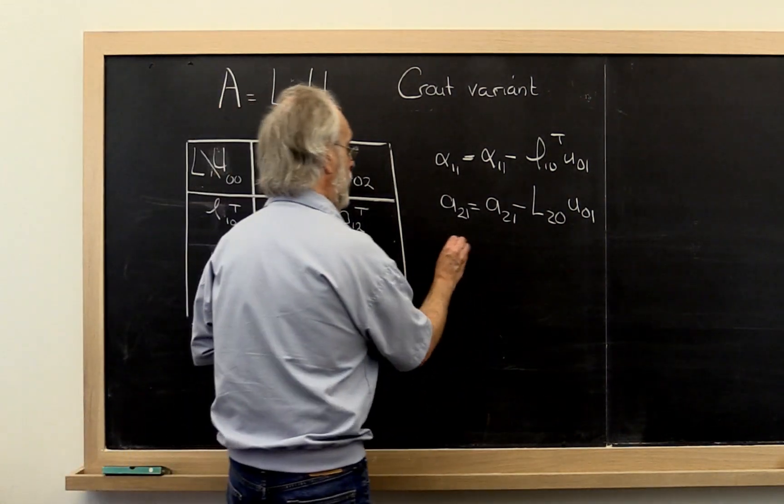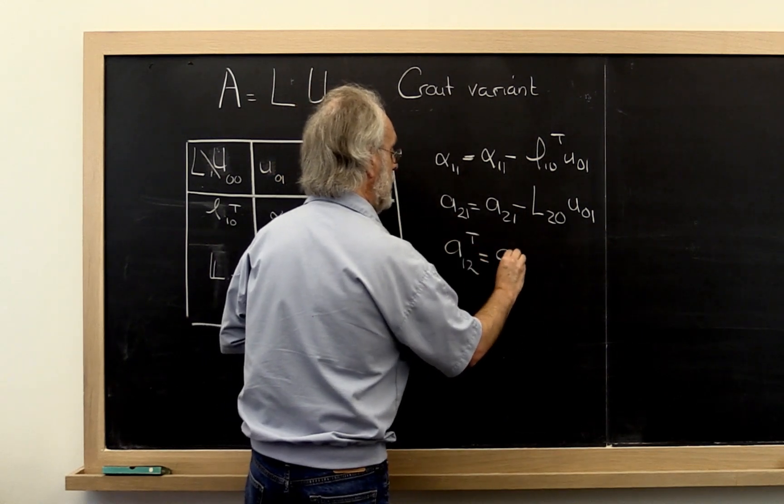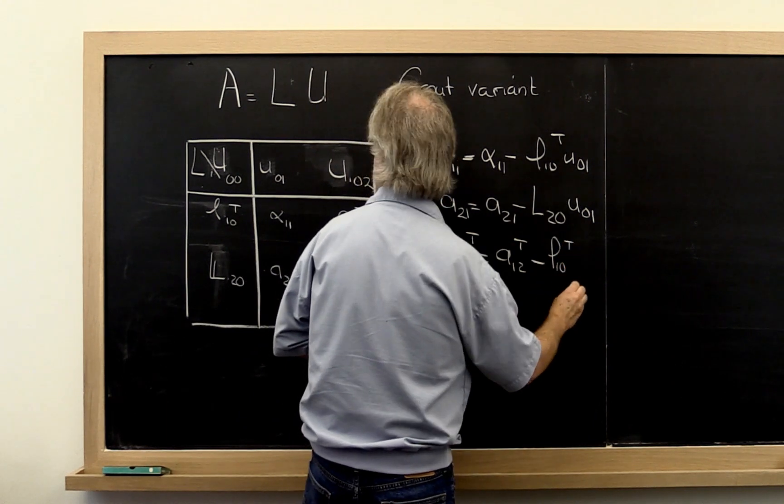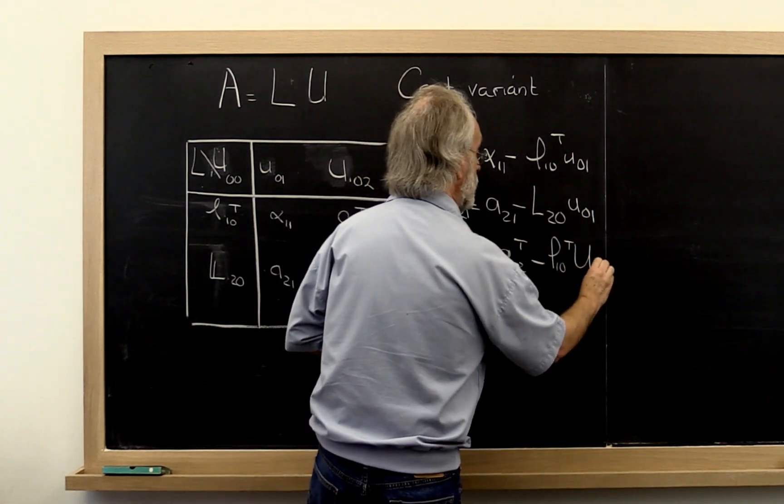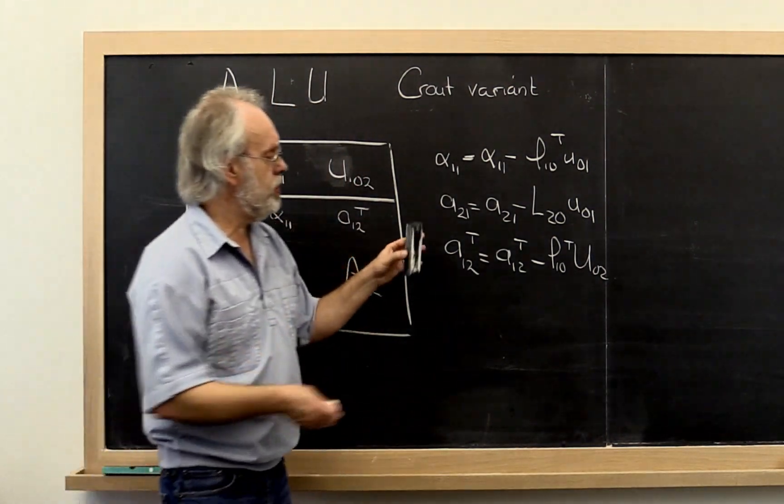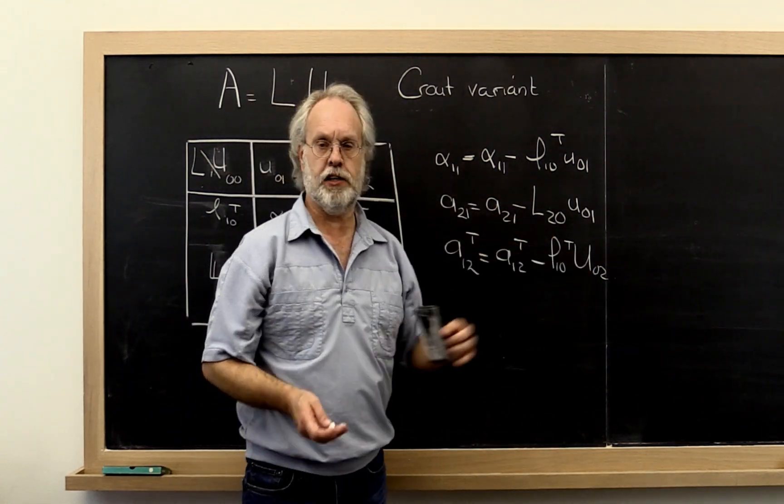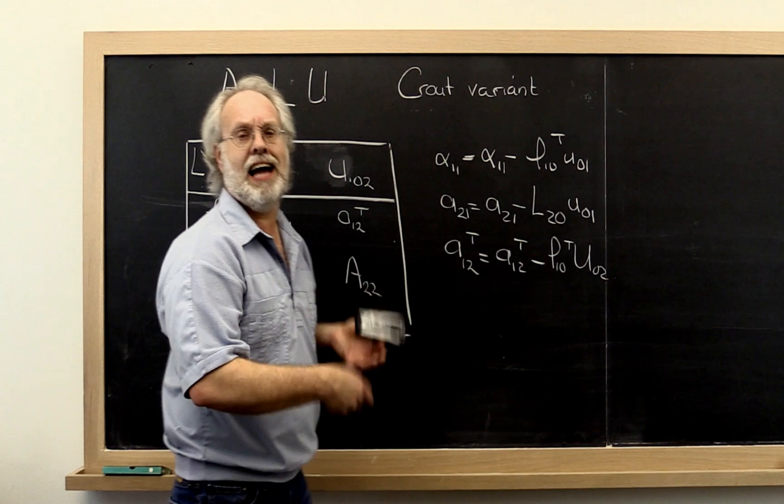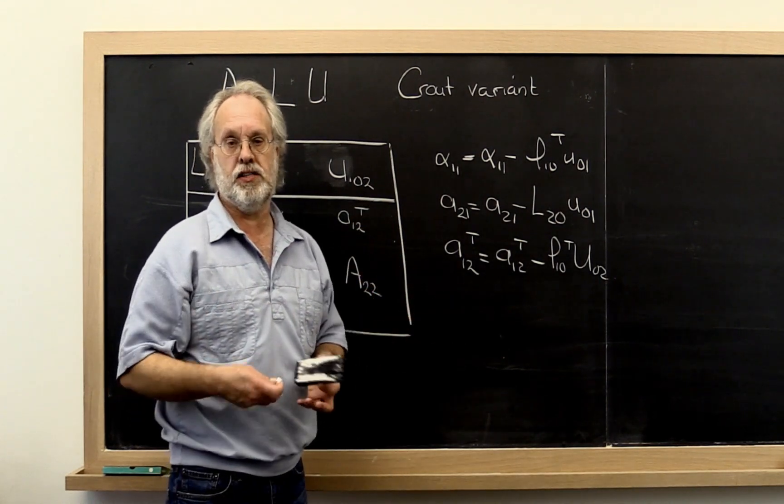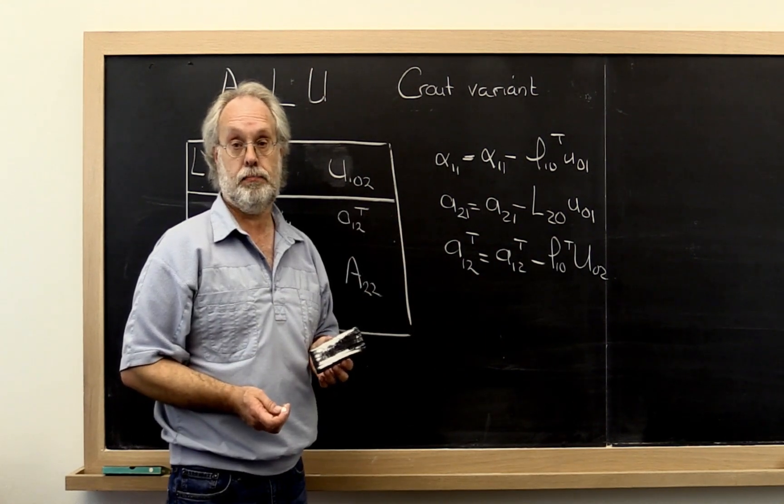A12 transpose has to be updated by subtracting off L10 transpose times U02. We probably by now have encountered this trick where you can just transpose both sides and turn this into a matrix vector multiply. Either we can easily get error results for this or you can see how we can take the error results that we have for matrix vector multiplication and turn it into error results we can use here.